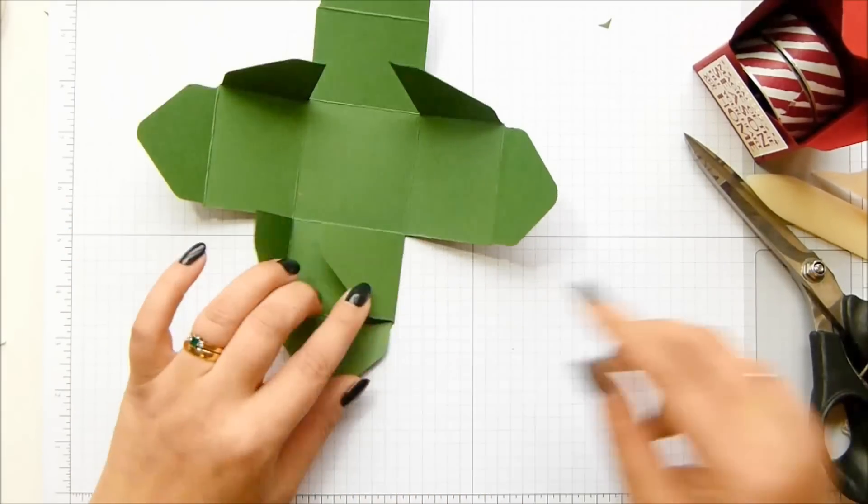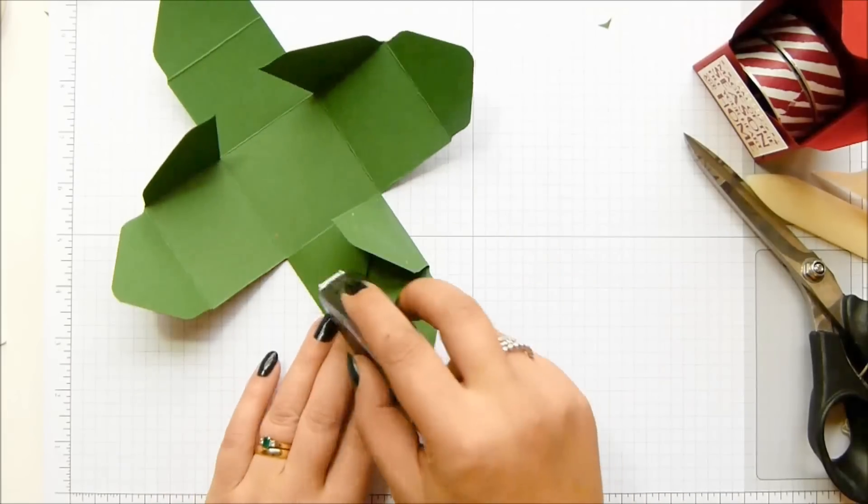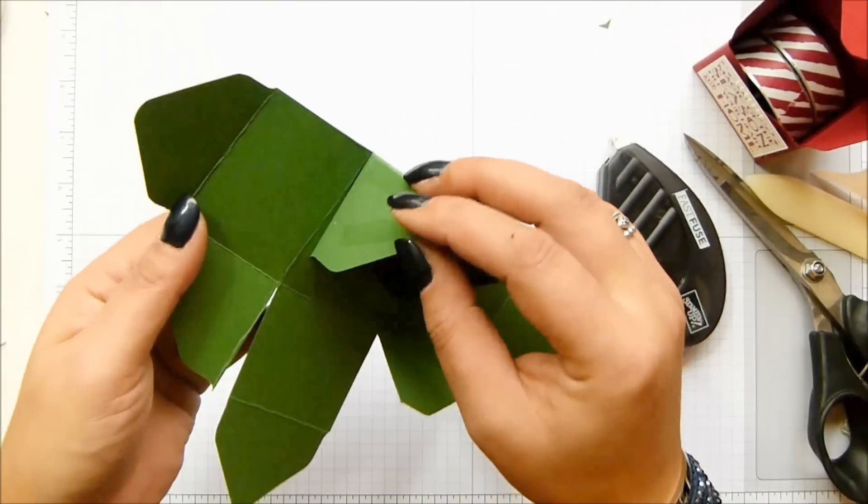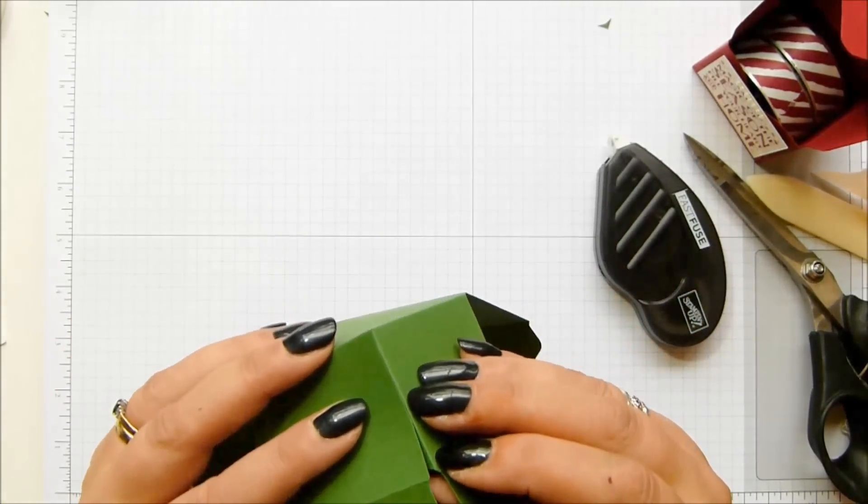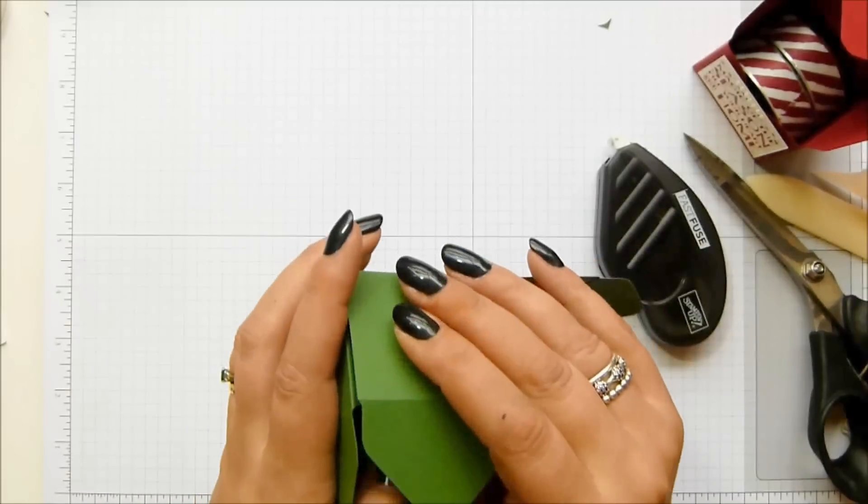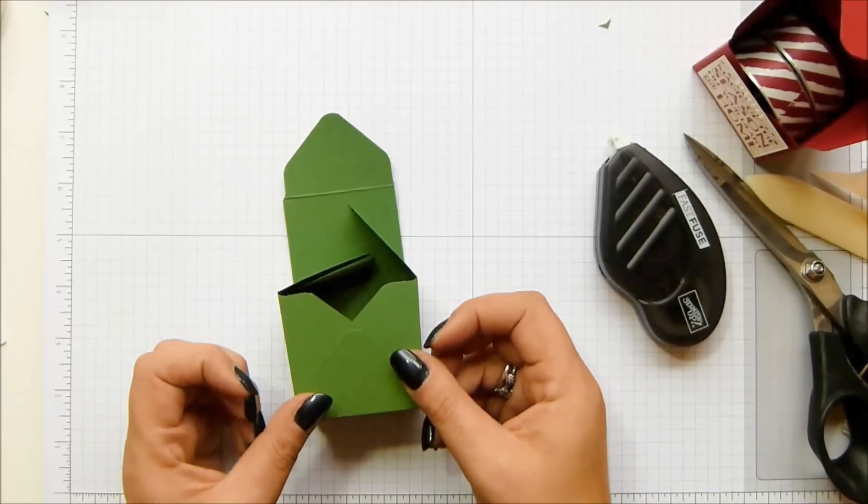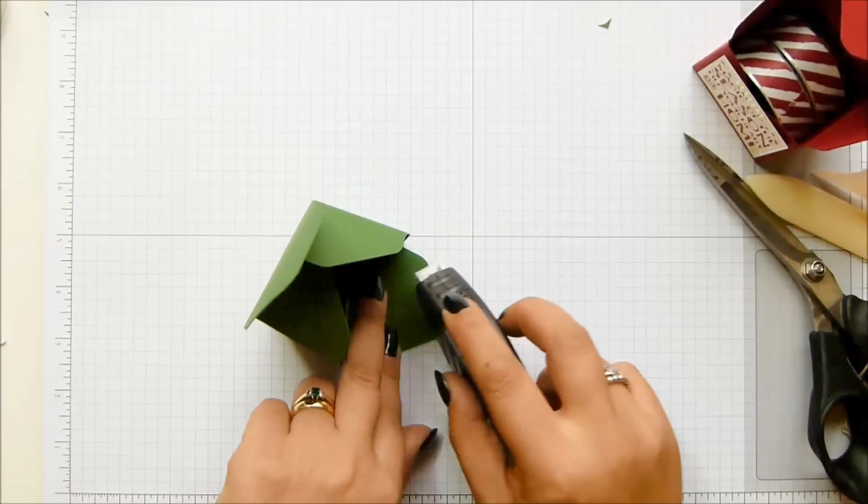Okay, so I'm going to put some adhesive on there and there. I've got my fast fuse. And then you build it up to form the sides of your box. And that one as well. And then you fold the sides in and that one over the top.